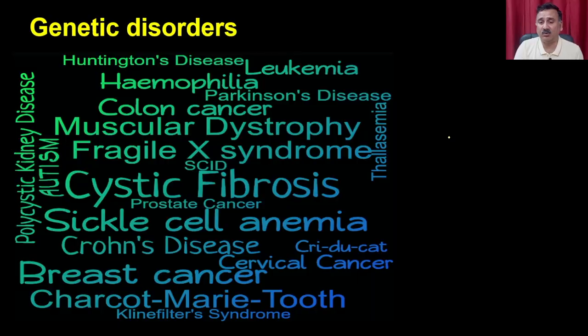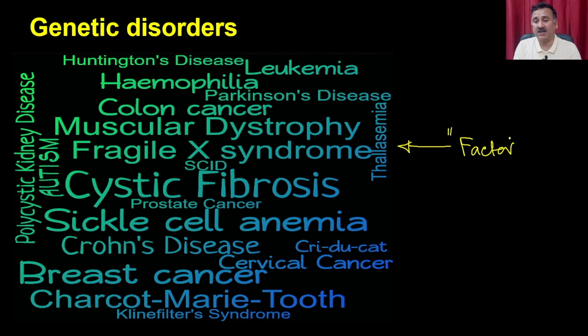The mechanisms of these diseases are very different. In some cases you are over-expressing a particular factor; in other cases you are not able to provide a crucial component, and that is how you cannot run a particular metabolic pathway. We have thalassemia, muscular dystrophy, cystic fibrosis, Huntington disease and so on — all happening because one crucial factor is either produced in large quantity or is not available for the human body.